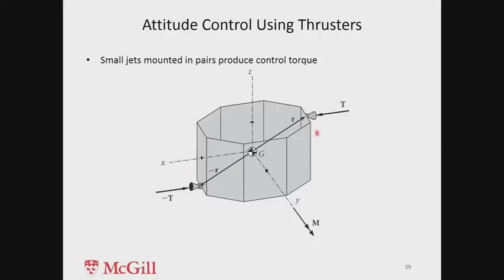Let us say we have a body here. If you are using thrusters, you will have, for example, two thrusters. You can apply thrusts in these two, but you must have a moment arm — the thrusts should not be collinear, otherwise there will be no torque. Here you are applying two forces which are not collinear, so around the center of mass they give rise to a torque. They are equal and opposite, so they will not affect orbital motion — net force is zero, but net torque is not zero.